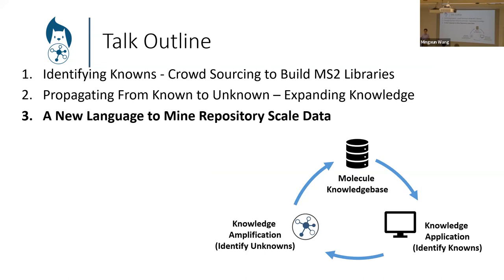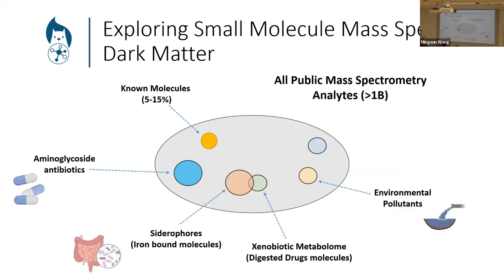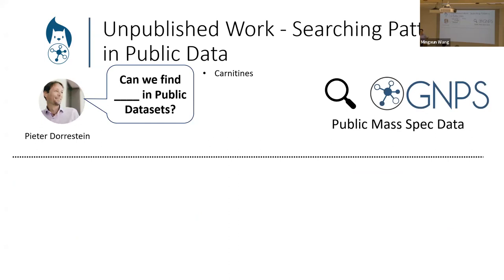That covers the first two sections that rely on annotations and spectral libraries. The third point is how can we make use of the other 87% of the data by leveraging computational tools as well as the knowledge chemists have built up. I want to start with a little vignette — it kind of paints chemists in a good and bad light. Working with Peter, a good friend and master chromatist and chemist, we were chatting maybe a year and a half or two years ago.